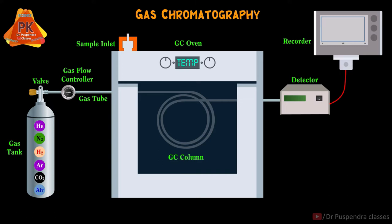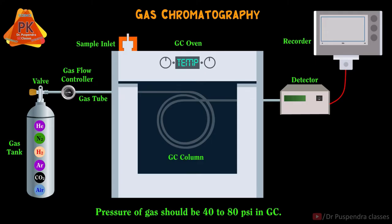The next part of the GC instrument is the gas controller. It will help us to control the gas flow rate. In GC, the pressure of the gas should be in the range of 40 to 80 psi.